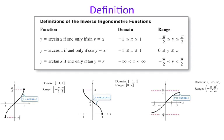Inverse functions are when you switch X and Y. There are two different ways to denote an inverse trig function. You can use arc or you can use the actual symbol for the inverse — the negative 1 exponent. So arc sine, arc cosine, and arc tangent are the same as inverse sine, inverse cosine, and inverse tangent written with a negative 1. You'll see it written both ways.